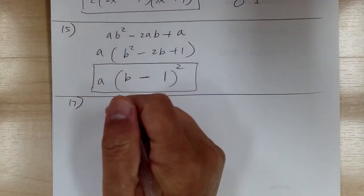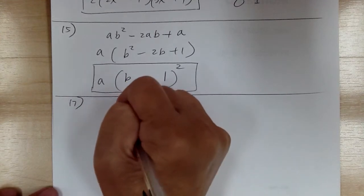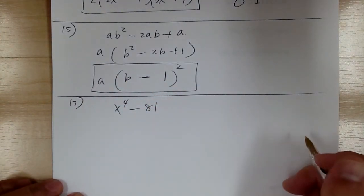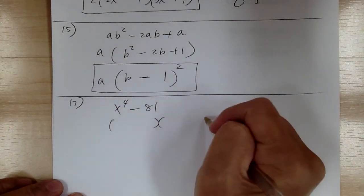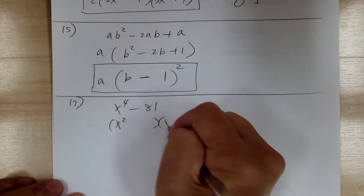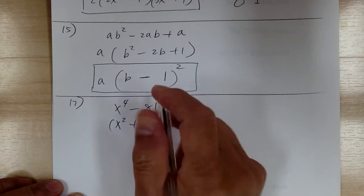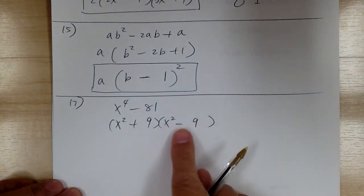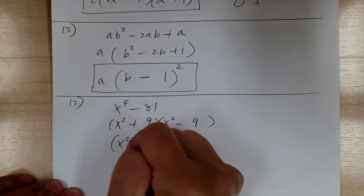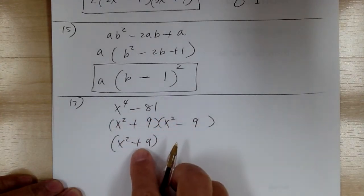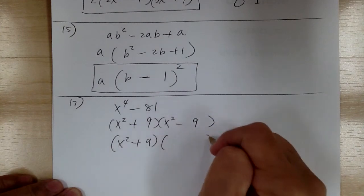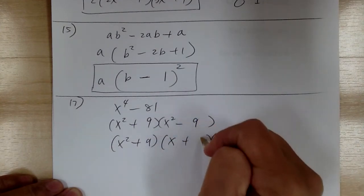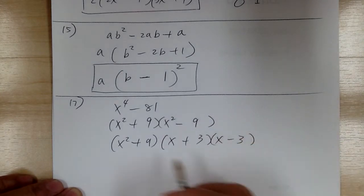Number 17. You have x to the 4 minus 81. Step 1, common factor cannot. Step 2, difference of squares. So it would be x squared, x squared, plus or minus, and you need 9 and 9. Notice this is the difference of squares again — do not do anything with the sum. For the difference, get two sets of parentheses: x, x, plus or minus, 3, 3. And that's it.